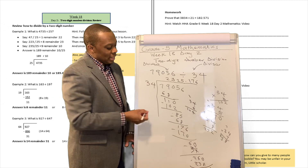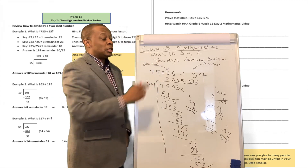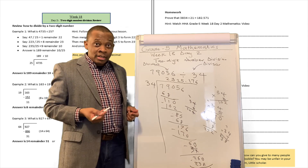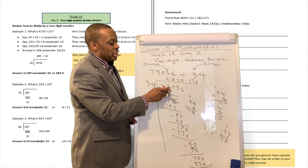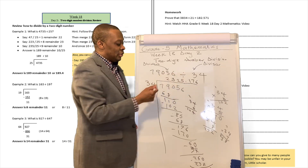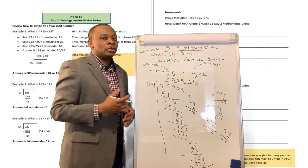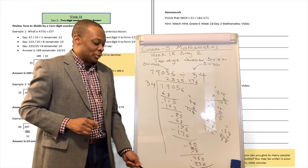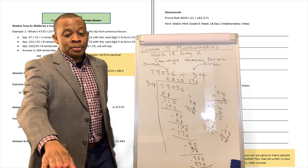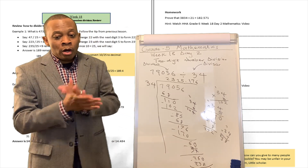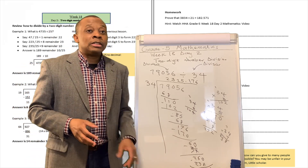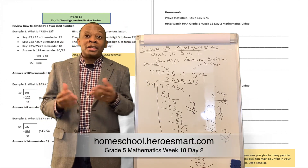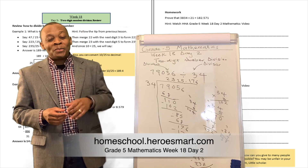That's how you do your two-digit number division. Is it that simple? Yes, it is — just put the dividend here, put the divisor right outside, and start doing it one step after another. Go ahead and turn to page number 140; you're going to see additional things there to retain this content a little bit better. Thank you, boys and girls, for joining me today. Remember, God cares about you, and so do we. Bye-bye.